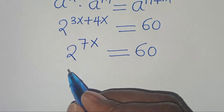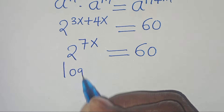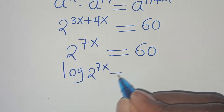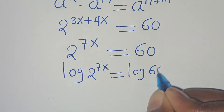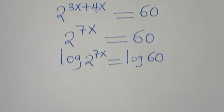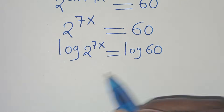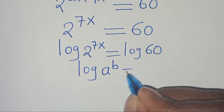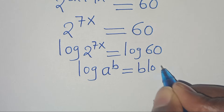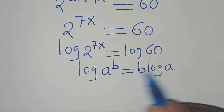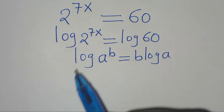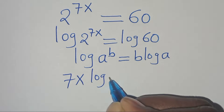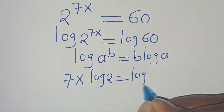To solve for x here, let's introduce logarithm. Taking logs of both sides, we have log of 2 to the power of 7x equals log 60. Now log of 2 to the power of 7x is in the form of log a to the power of b, which we can express as b times log a. So applying this logarithm property, 7x log 2 equals log 60.